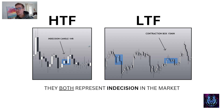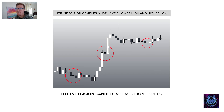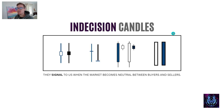A higher time frame indecision candle is a lower time frame contraction box. They both represent indecision in the market and a balancing between buyers and sellers. A higher time frame indecision candle must contain a lower high and a higher low — the same as the lower time frame contraction box. These indecision candles have big wicks and small bodies, or big bodies and little wicks. They are signals that the market has entered a neutral zone where buyers and sellers equalize and come to a zero-point balancing of the books.